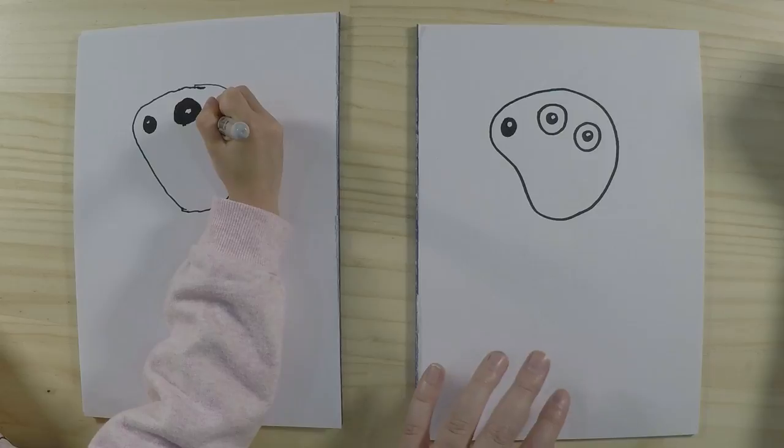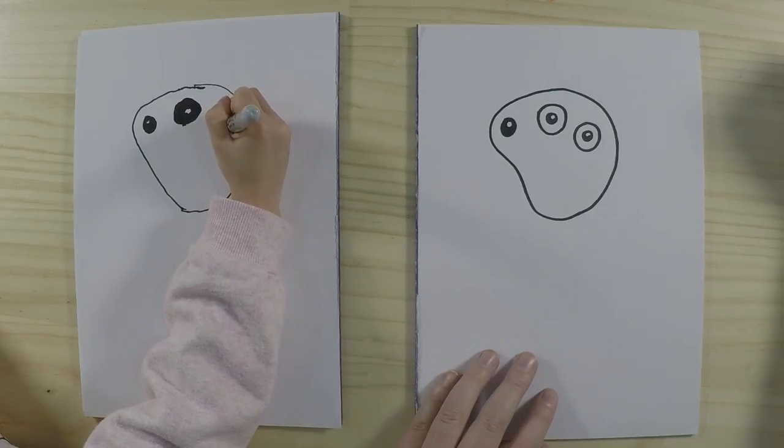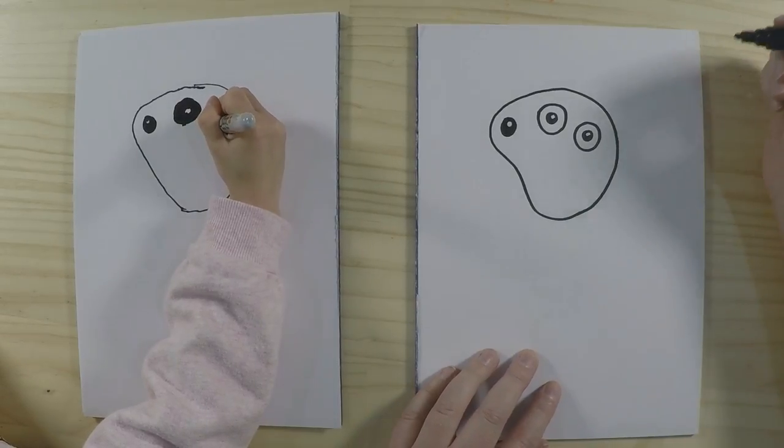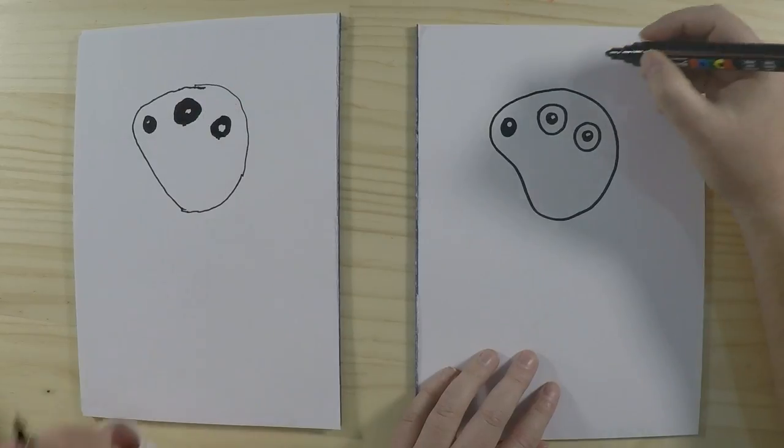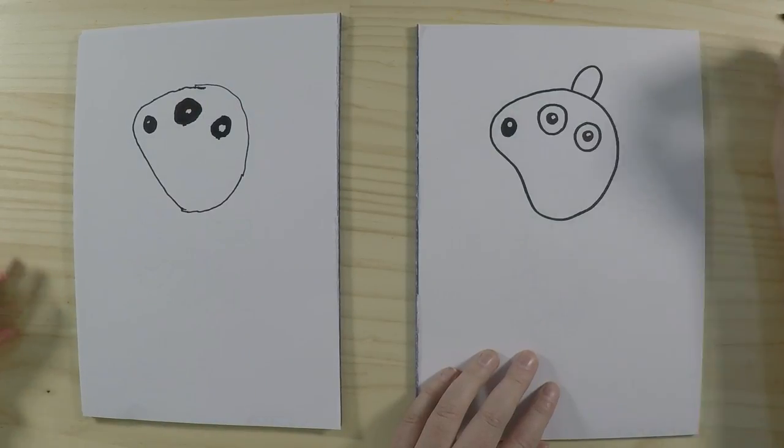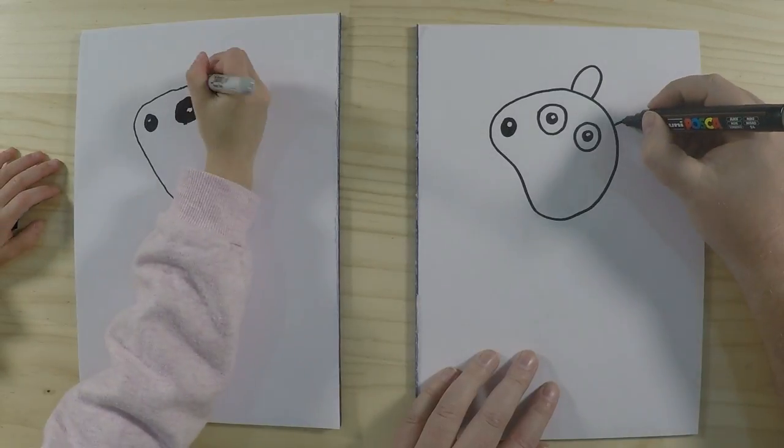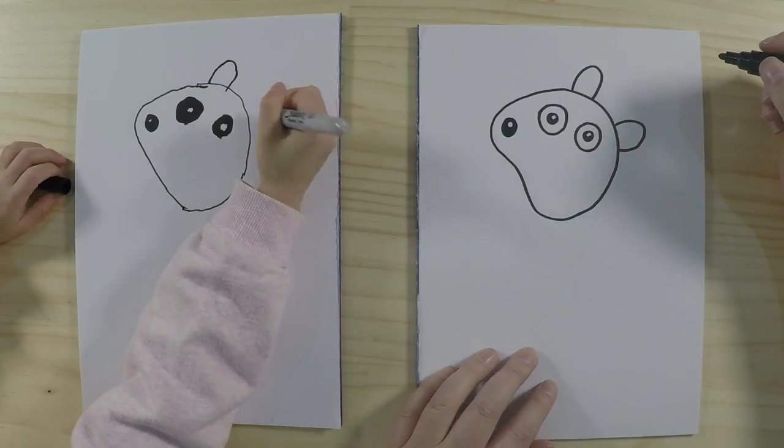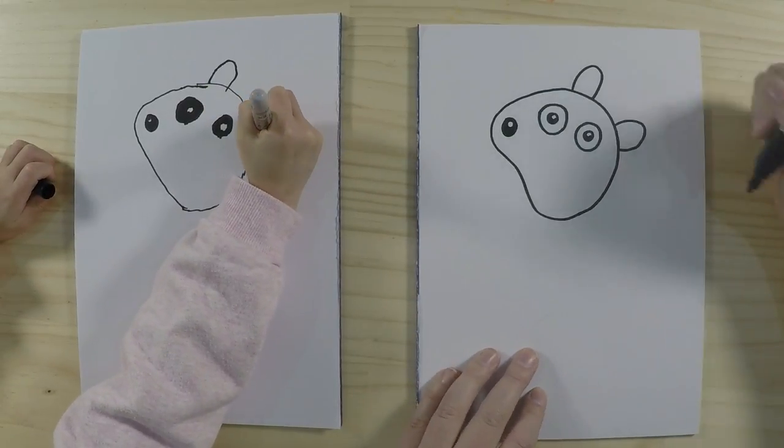Alrighty, it is looking good. Okay, and then we are going to draw his ears. So there is going to be one sitting on top here, just like a big U shape but kind of a V. Yeah, V is more pointy so U is more round.